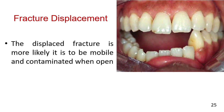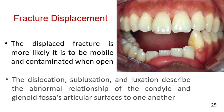The importance of displacement is that the more displaced the fracture, the more likely it is to be mobile and contaminated when open. The terms dislocated, subluxated, and luxated describe the abnormal relationship of the condyle and glenoid fossa's articular surfaces to one another. These terms are synonymous.